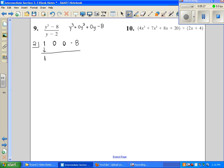So multiply, two times one is two. Add down, zero plus two is two. Multiply, two times two is four. Add down, zero plus four is four. Then we're going to multiply, two times four is eight. Add down, we have a remainder of zero. Our original is a third degree, so our answer is going to start with a second. So this becomes y squared plus two y plus four.